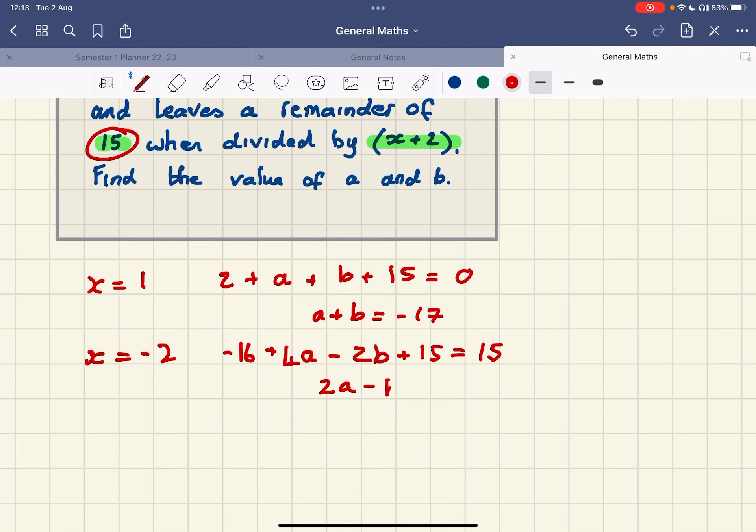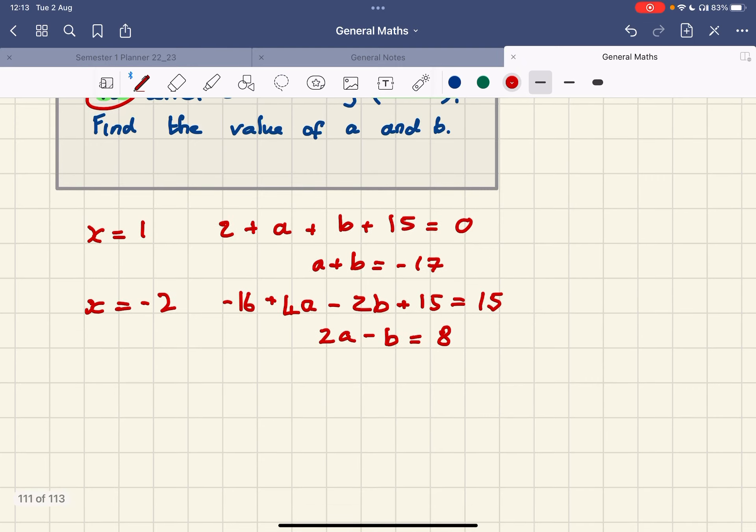We can divide everything through by 2 so we get 2a minus b equals 8. So we've got our two equations with our two unknowns and that's a very simple simultaneous equation.